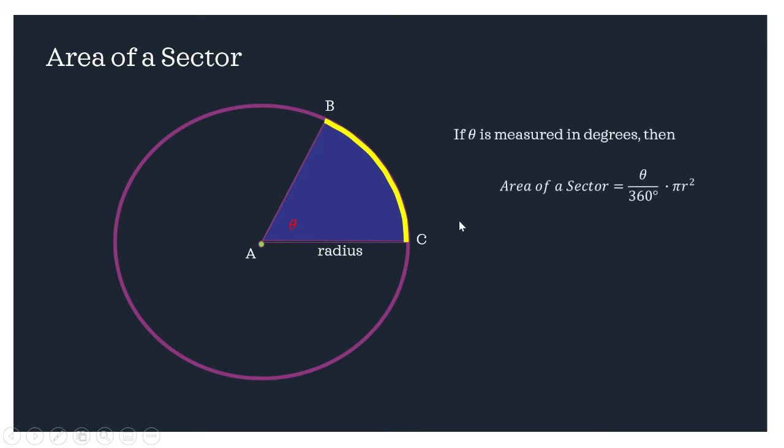If we know the measure of the central angle and the radius, we can use the following formulas. If theta is measured in degrees, that would be theta divided by 360 degrees times pi r squared. If the given is in radians, we can have 1 half r squared theta.